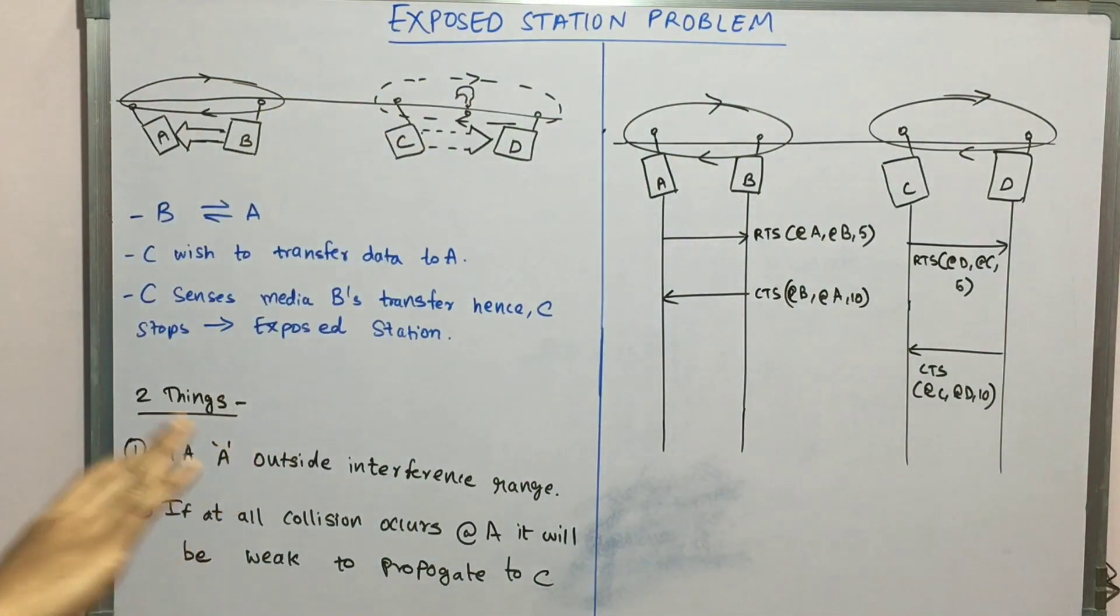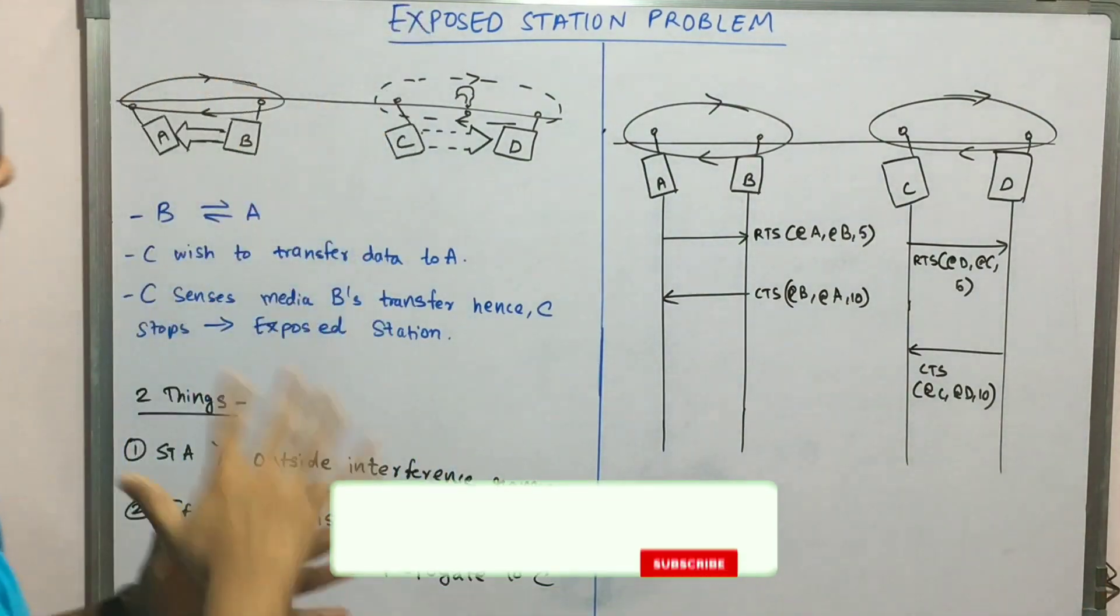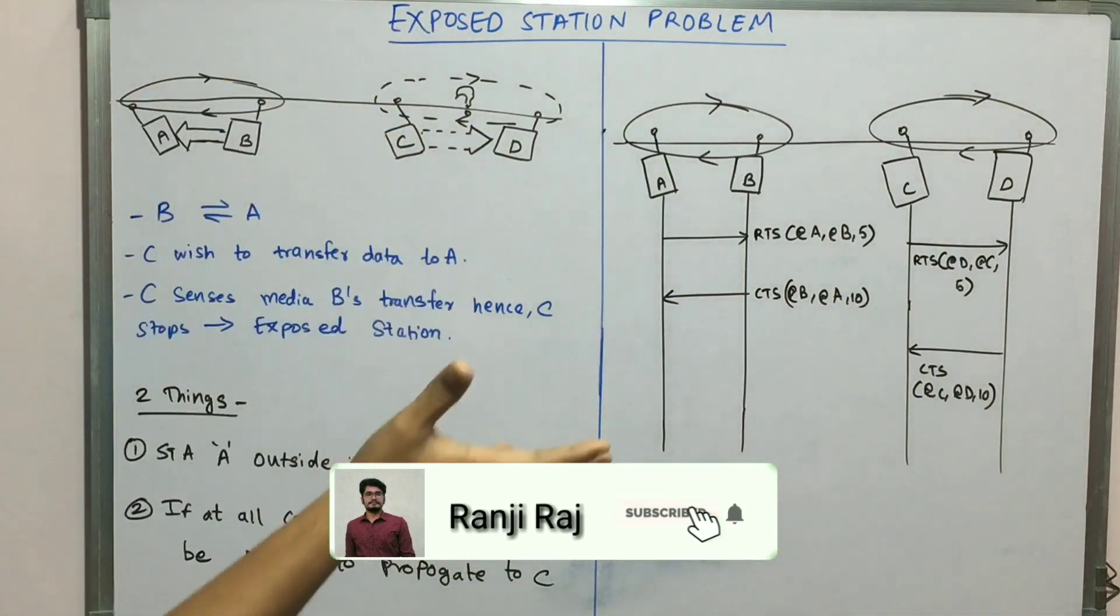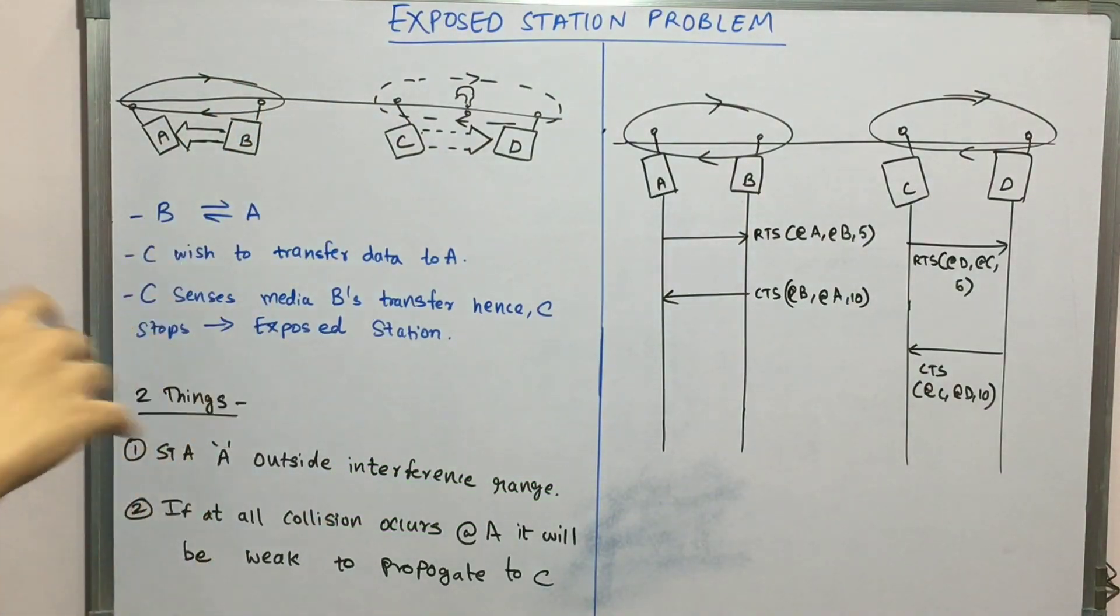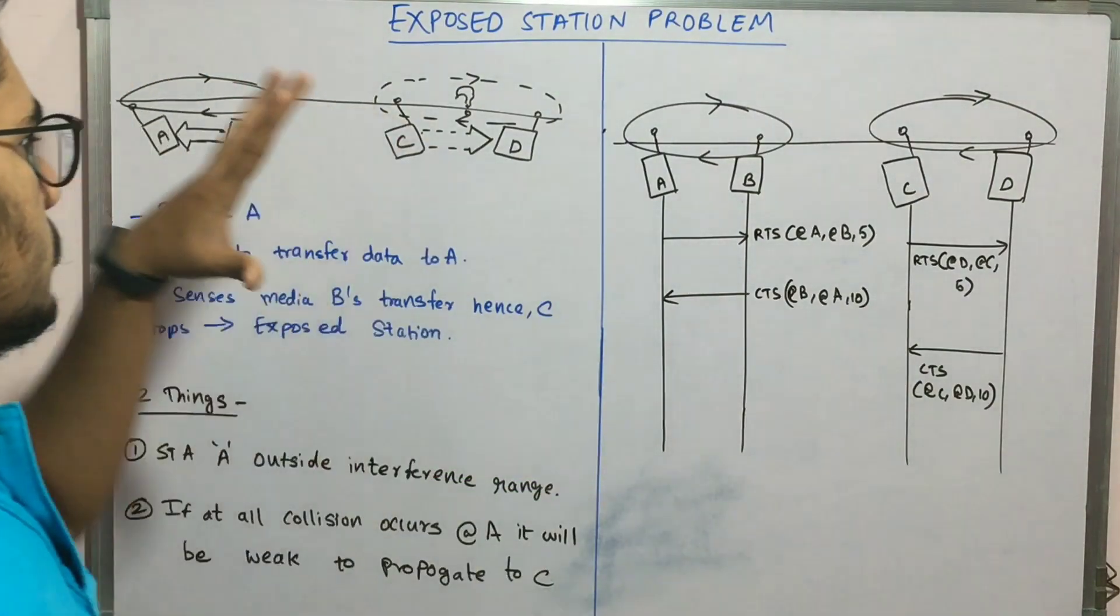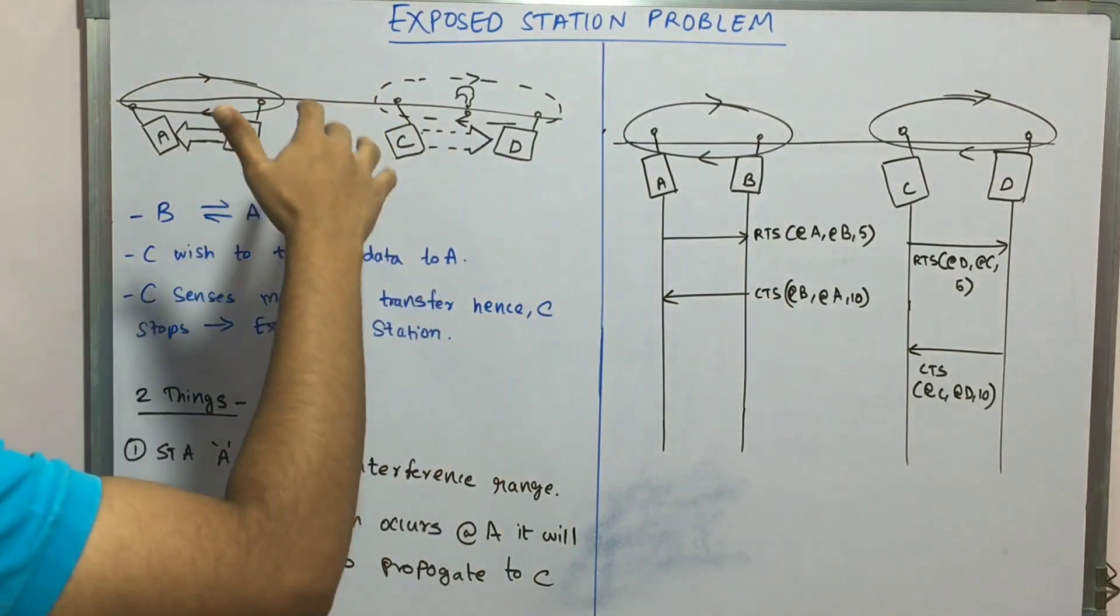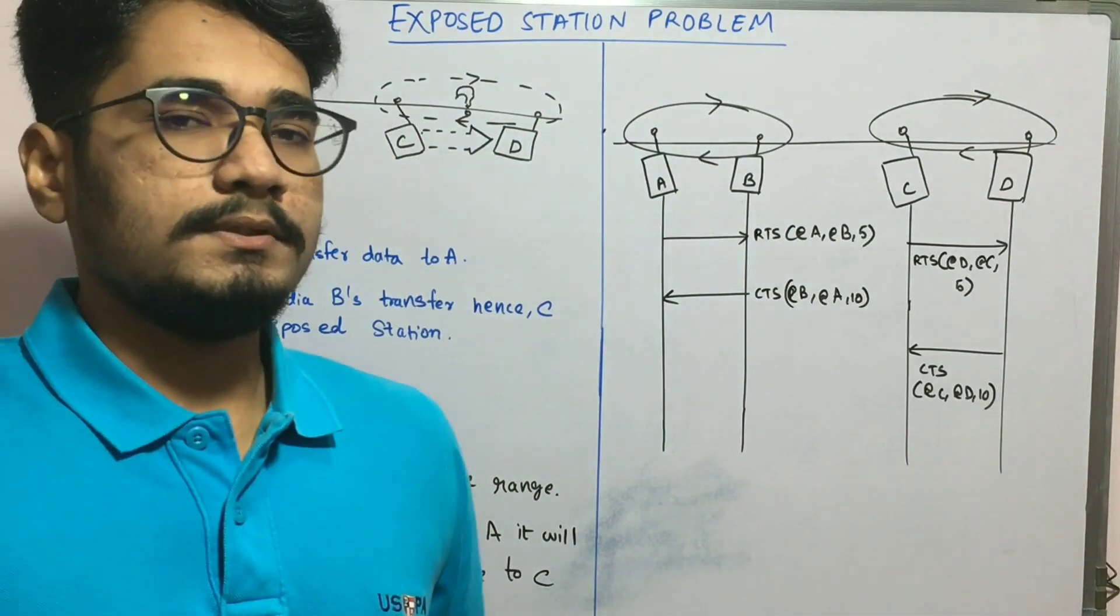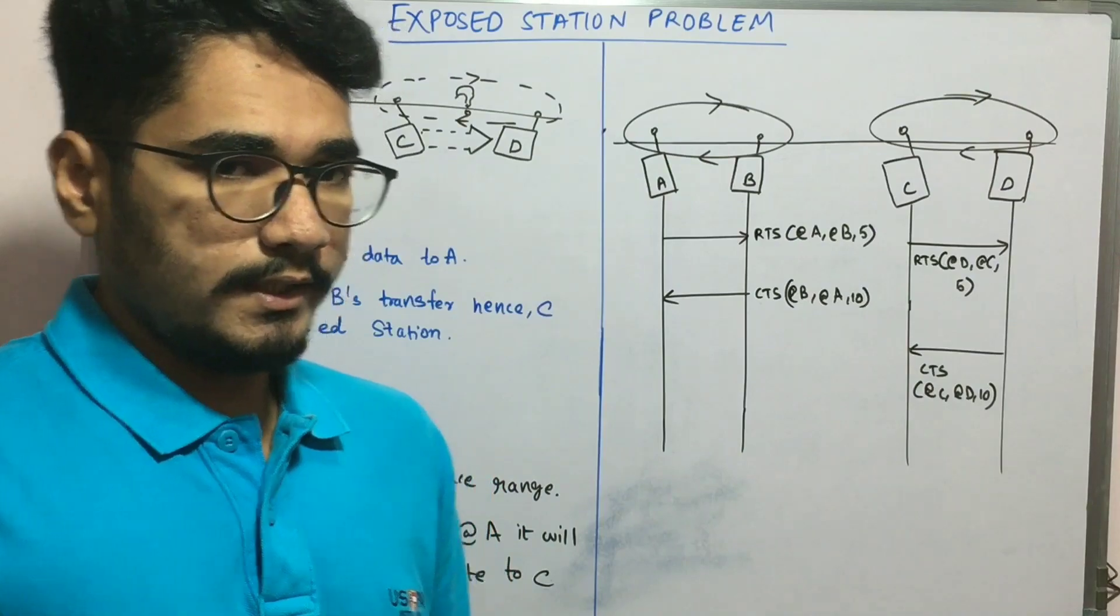If C wishes to transfer data to D and senses the medium, seeing what's happening in the environment, and C sees that B is transferring to A, then C will come under the wrong impression that since the medium is in busy mode, he should not do the data transfer. He will have the wrong perception that he should wait before transferring.